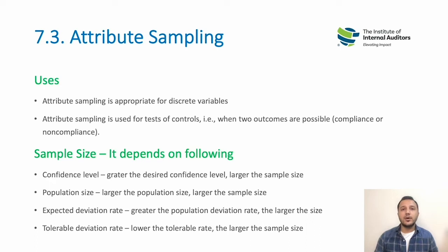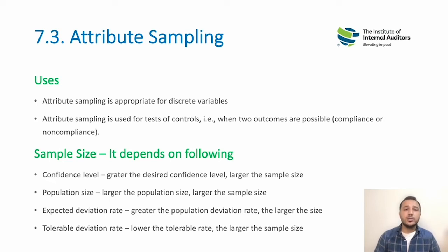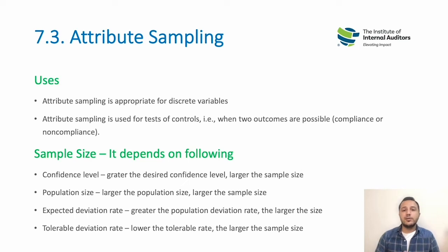If you want to achieve a greater confidence level, you need a larger sample to give an opinion after reviewing the data. If the population size is bigger, you also need a bigger sample size. Regarding the expected deviation rate, if the standard deviation within the data set is greater, you increase your sample size; if lesser, you can decrease it. For tolerable deviation rate, if you have less tolerability, you increase the sample size; if more tolerable, you can decrease it.